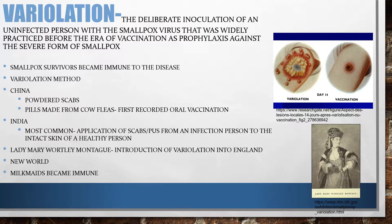Now let's talk about variolation. Variolation is the deliberate inoculation of an uninfected person with the smallpox virus. In layman's terms, you give a healthy person smallpox in a very small dose so that their body learns how to fight it off. This was before the era of vaccines — how doctors tried to protect people in small towns and their patients.